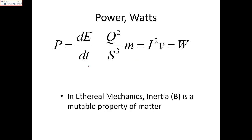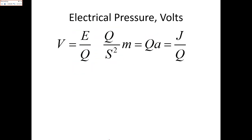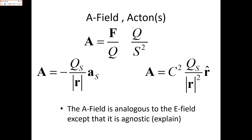Power in watts is current squared times velocity, which is the time derivative of energy. For electrical pressure: people sometimes say 'electrical potential' for volts, but 'potential' is a little misleading — it implies a potential field, which implies an electric field. Electrical pressure can come from magnetic sources, which are not potential fields, so we need a more agnostic term. 'Electrical pressure' is agnostic.